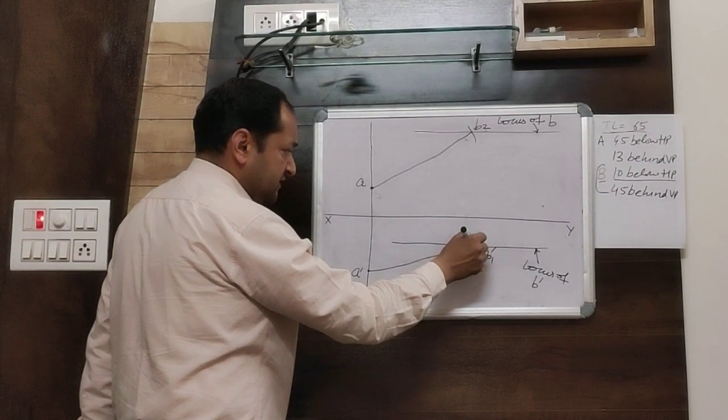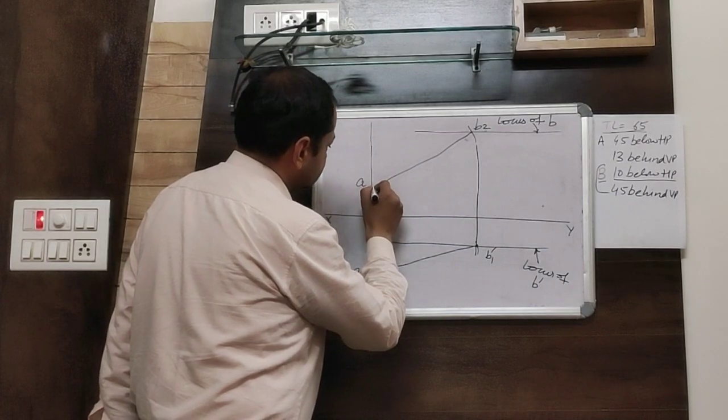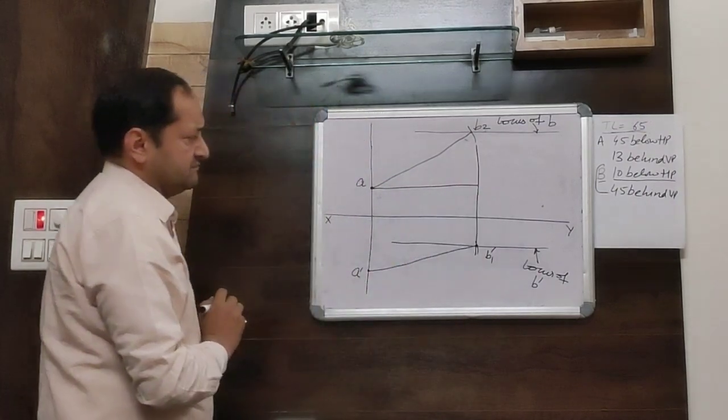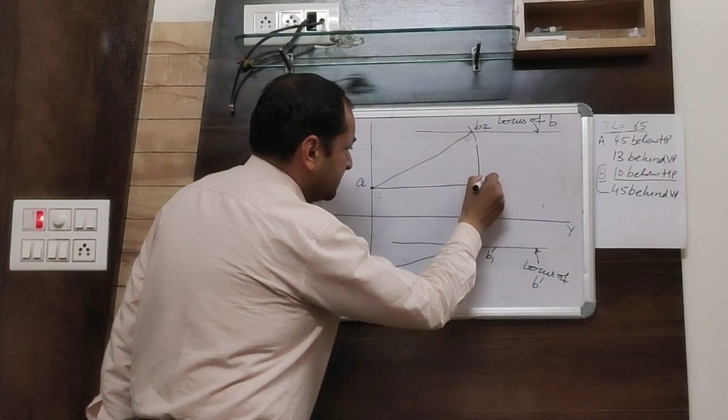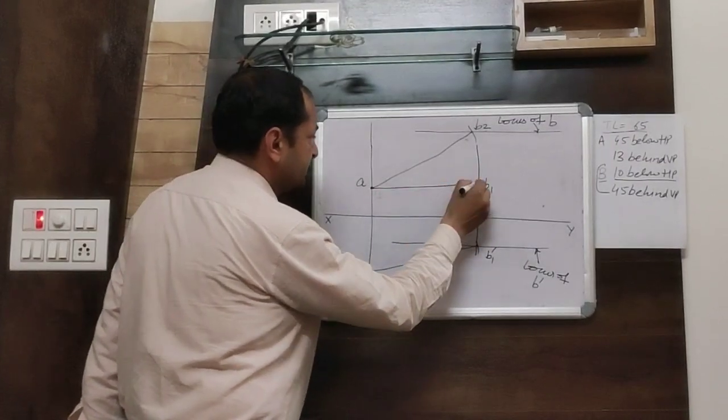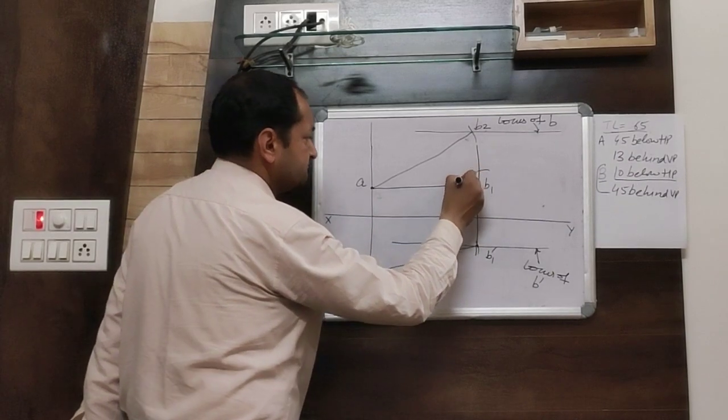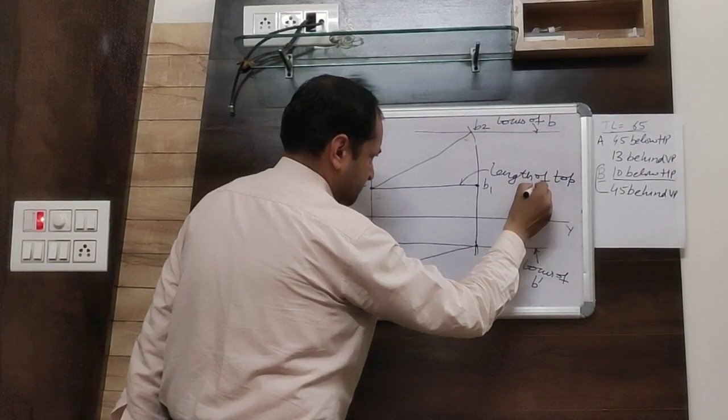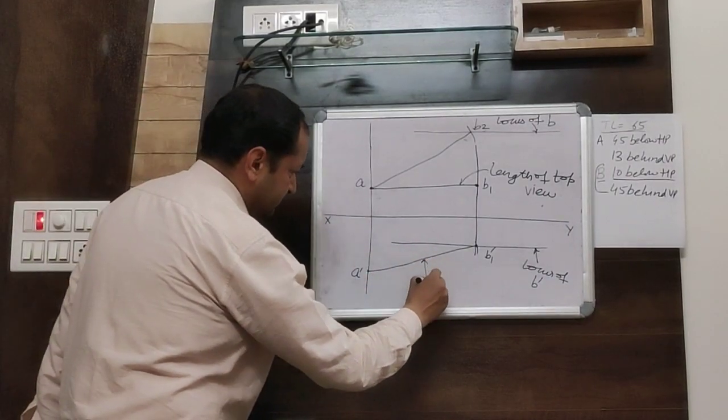Then, draw a projector line passing from B1 dash. Draw a horizontal line parallel to XY which is intersecting this projector line at point B1. Now, this AB1 is giving you the apparent length of the top view.